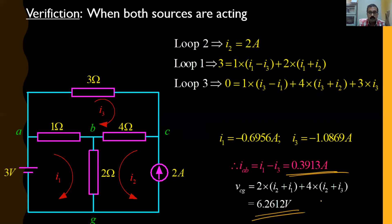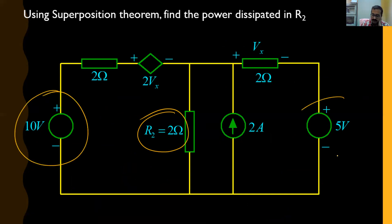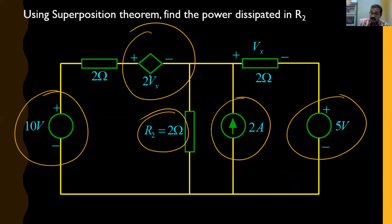Now consider a circuit with dependent sources. Using the superposition theorem, find the power dissipated in R2. We have two voltage sources (10 V and 5 V), one current source (2 A), and one dependent voltage source (2Vx). Important: you cannot remove dependent sources — only independent sources are replaced by their internal impedances. Keep only one independent source active at a time.